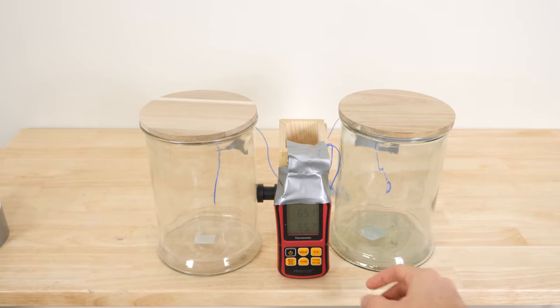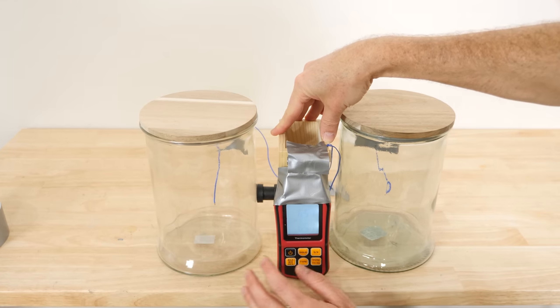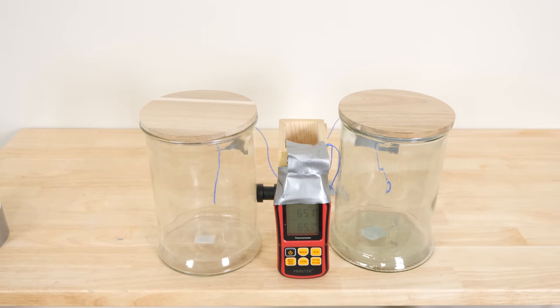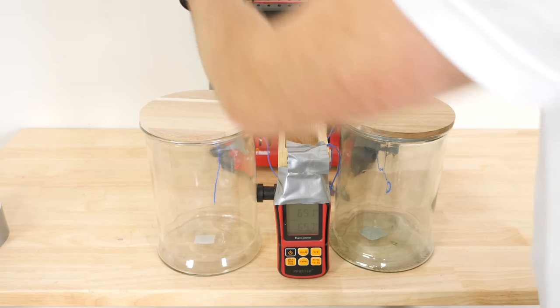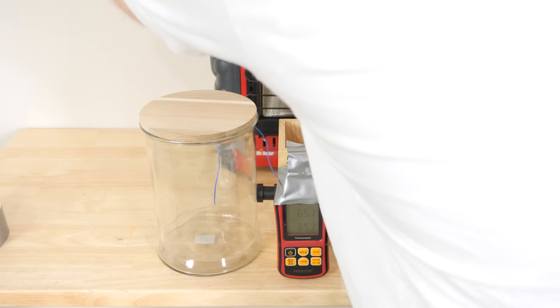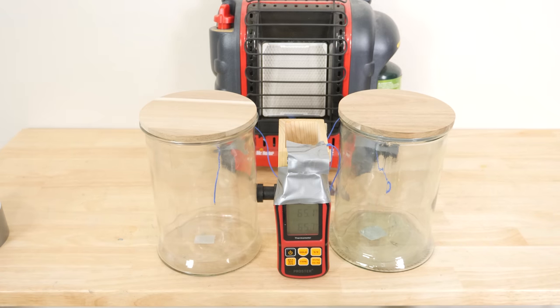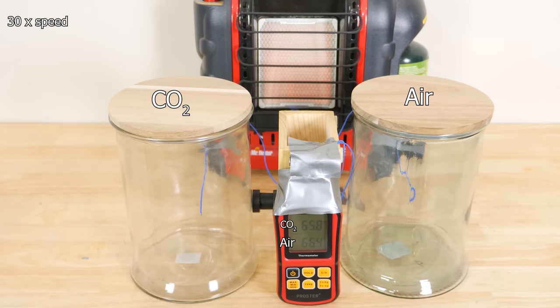Okay, they're now within half a degree of each other. One on the left is 65.1 and the one on the right is 65.7. So now let's put our IR source. I'm going to put it directly in between them. Okay, I can feel the heat. Let's do a quick time lapse so we don't have to wait.